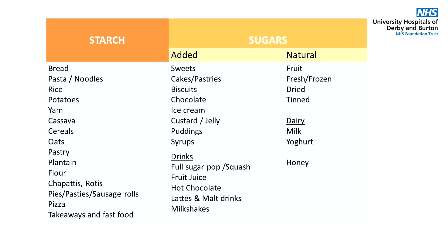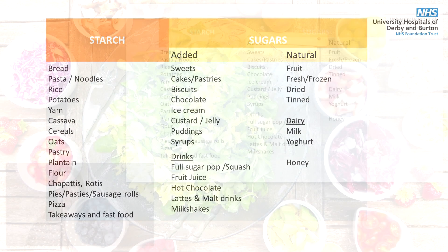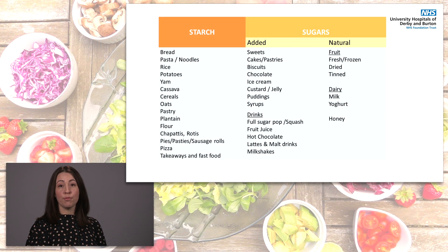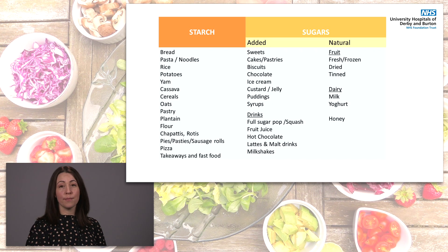Carbohydrate foods also include foods that contain sugar, whether that be added sugar or natural sugar. These foods include sweet treats, cakes and sugary drinks, as well as fruit and some dairy foods such as milk and yoghurt. All of these foods are broken down in the body into glucose and will lead to a rise in your blood sugar.